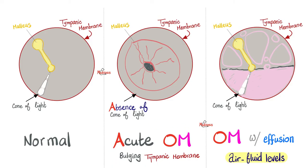In acute otitis media, there is bulging of the tympanic membrane and absence of the normal cone of light. In otitis media with effusion, we see effusions, which is why there is an air-fluid level behind the tympanic membrane. The cone of light could or could not be present.